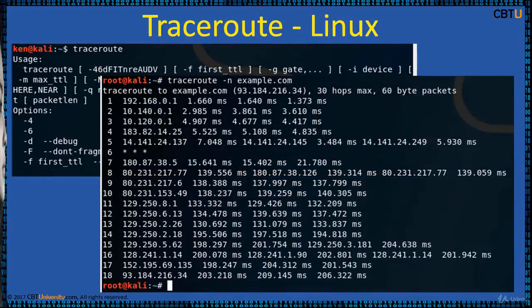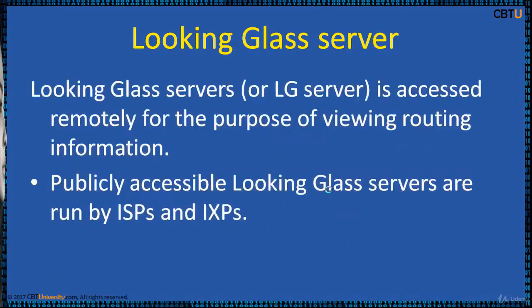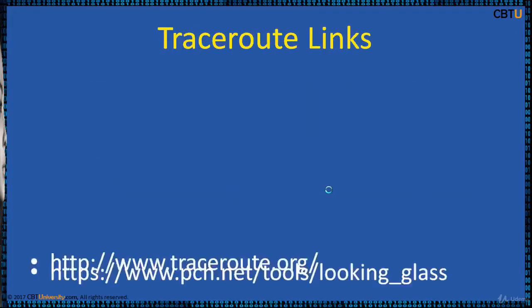In Linux, to avoid DNS resolution use the switch -n like: traceroute -n [domain] and hit enter. A Looking Glass (LG) server is accessed remotely for the purpose of viewing routing information. Publicly accessible looking glass servers are run by internet service providers and internet exchange points.